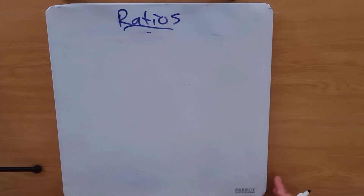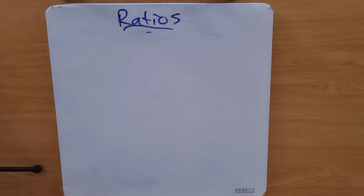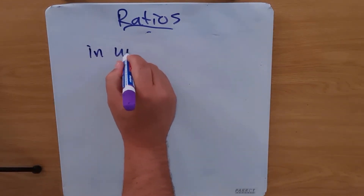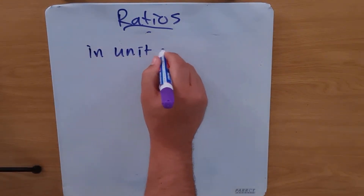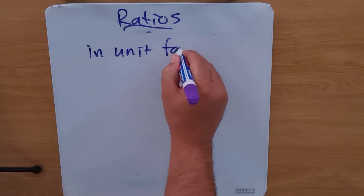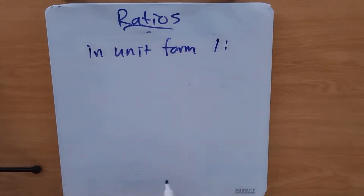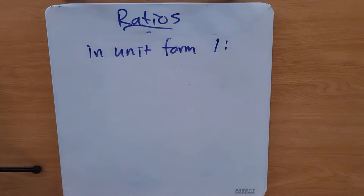Hi there learners, and welcome to another video where we are still talking about ratios. Today we're talking about ratios in unit form, and this means that it's got to be a ratio of one to something.